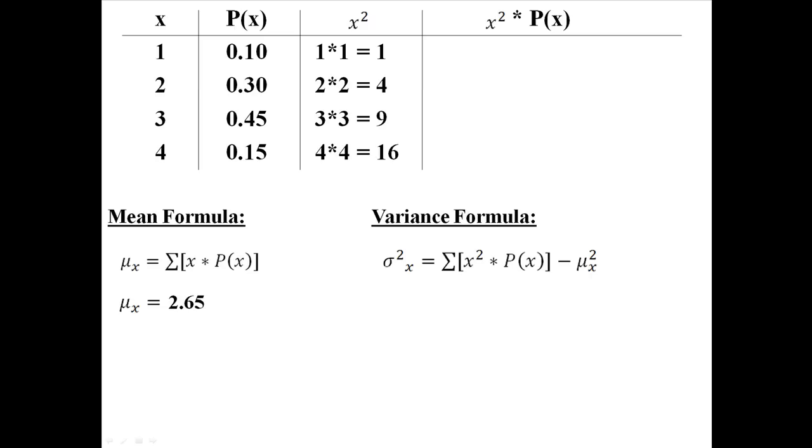And then in the next column, we need to find out what each x squared times their associated probability is. So it would look something like this: x squared, which is 1, times the probability associated with 1, which is .10 equals .10, and so on. 4 times .3 is 1.20. So now we have all of the x squared times each probability.